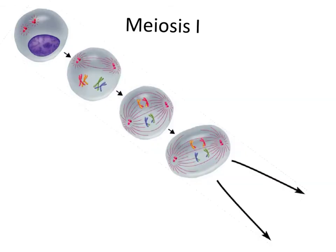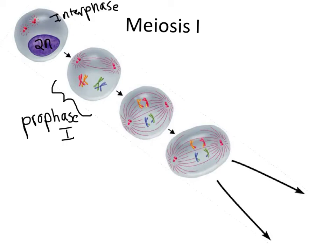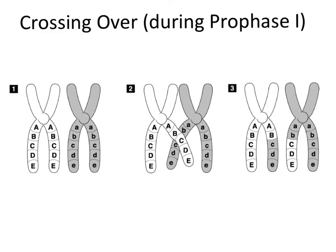It all starts out, predictably enough, with a diploid cell, with its two copies of chromosomes unwound in the form of chromatin in its nucleus. This is known as interphase. Next comes prophase I, and like in prophase of mitosis, the chromatin condenses into chromosomes, the spindle fibers start to form, and the nuclear envelope has broken down. However, something very unique also happens during prophase I of meiosis that doesn't happen during mitosis: chromosomes cross over.